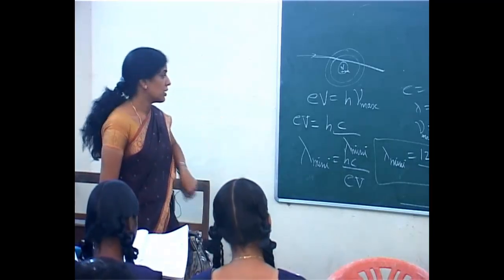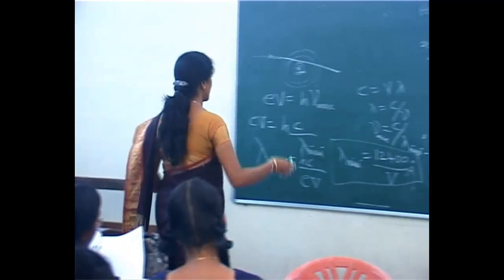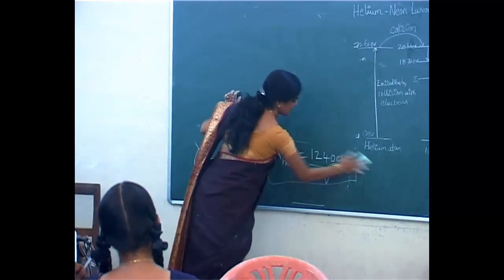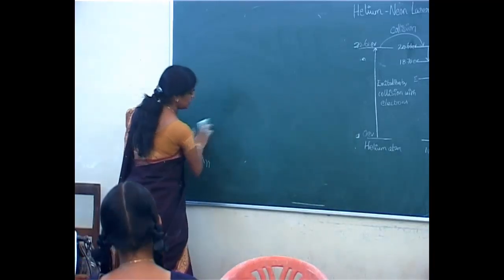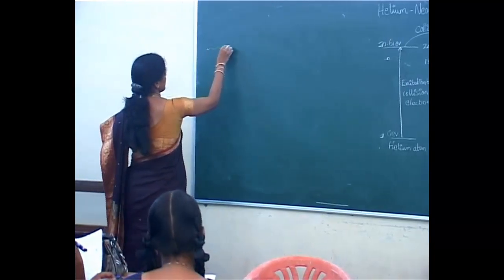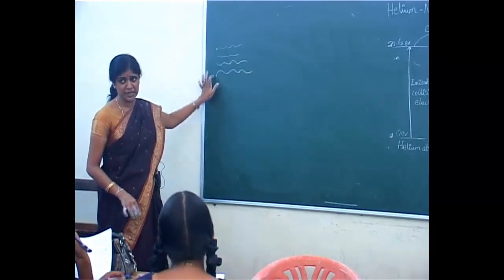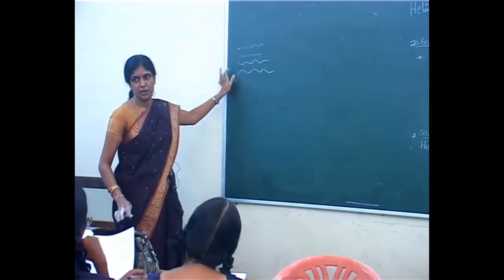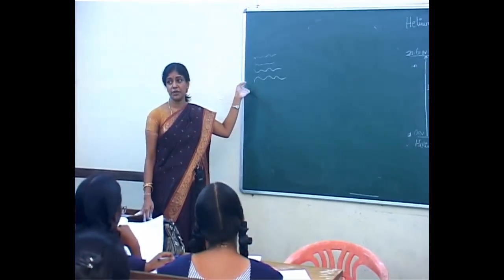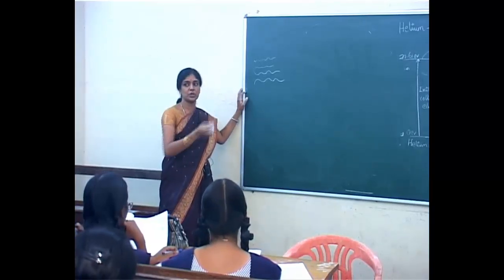Now we will compare with ordinary light. The light wave is emitted from an ordinary light — how will the light waves be emitted? This will be the light waves emitted from an ordinary light. Will all the light waves be in phase with each other for light waves emitted from an ordinary light? These light waves are not in phase with each other.